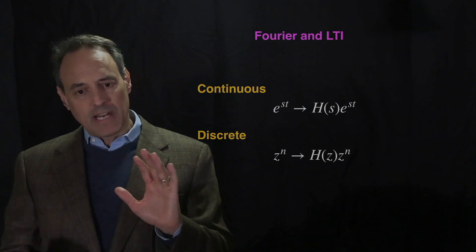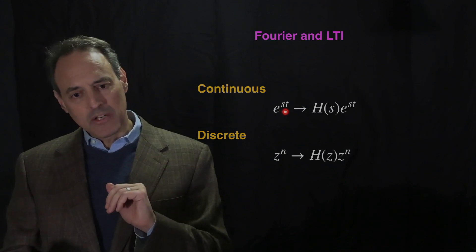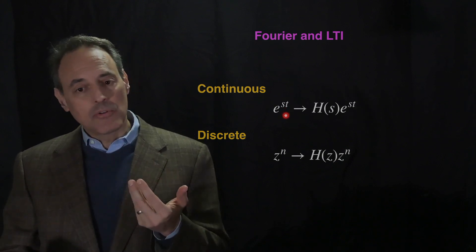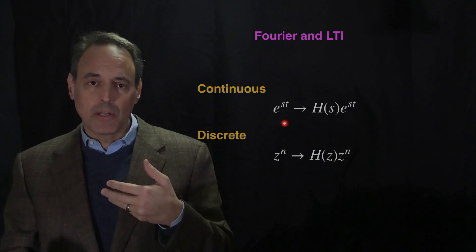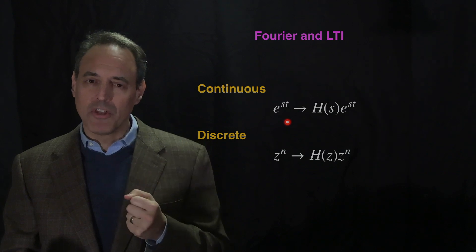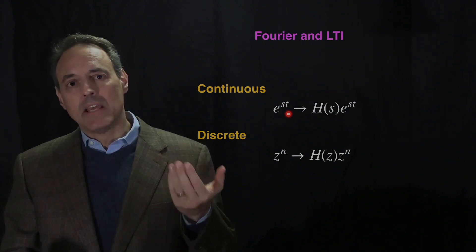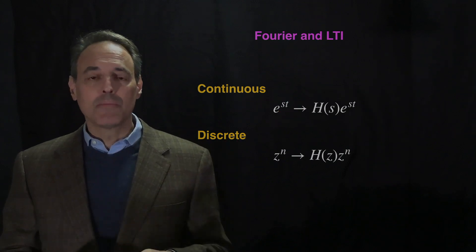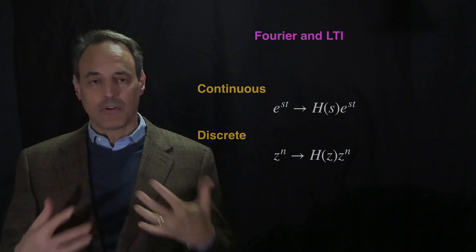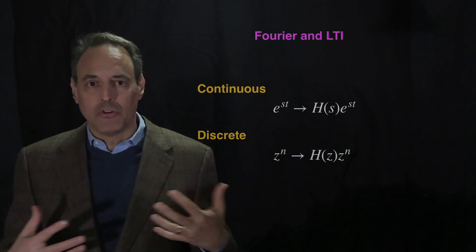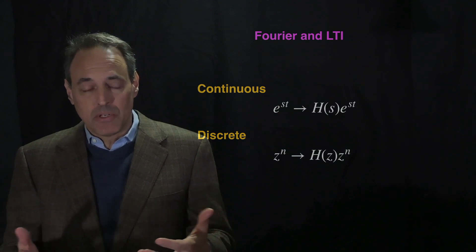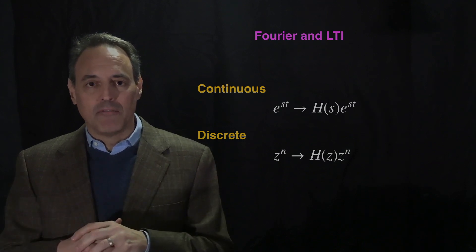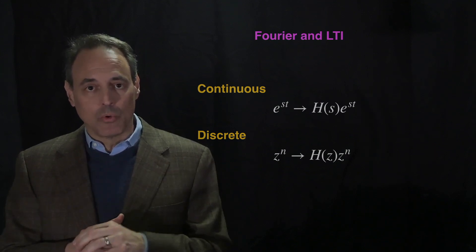That's great, except that oftentimes if this exponential — this S — has a positive real part, then as t goes to infinity, this goes to infinity. We're typically not going to be thinking about functions that blow up. And if S has a real part that's negative, then this thing goes to zero. So in some sense, if it has a real part — positive or negative — it does things we don't want the signal to do. It either goes to zero and disappears, or goes to infinity. We think about signals as being finite signals that we want to look at, explore, and analyze.